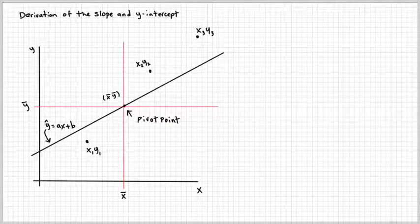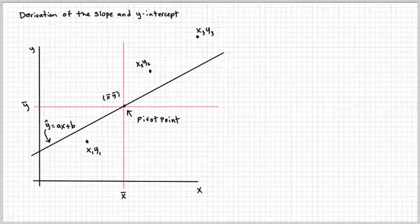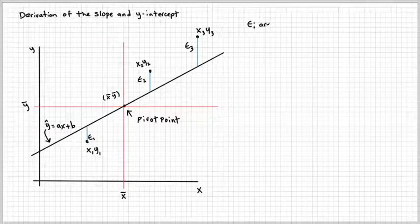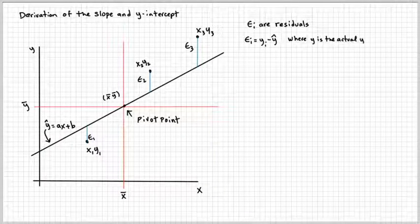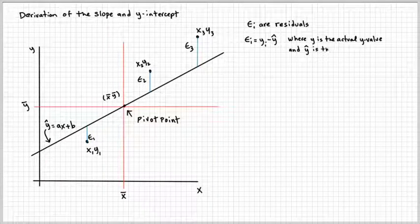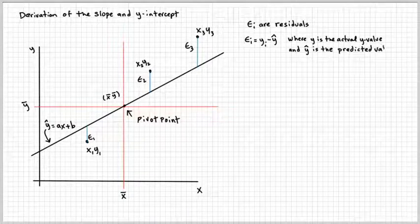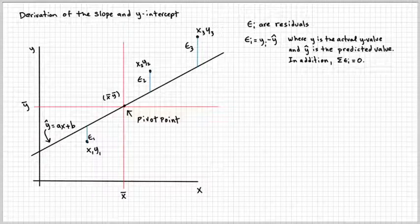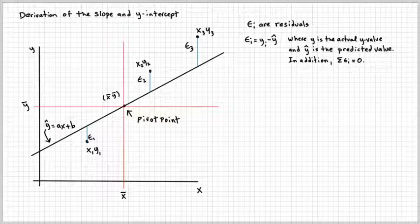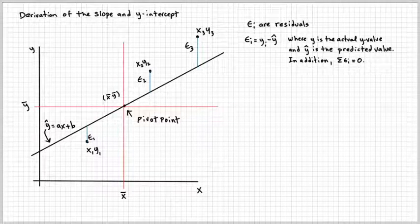The question is, is this the best line you can draw? Well, it turns out that you can measure this thing called a residual ei or epsilon i. And this epsilon has a distance and it can be measured by yi minus y hat. This distance right here can be measured.